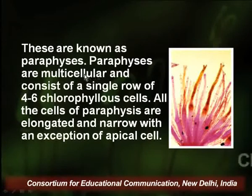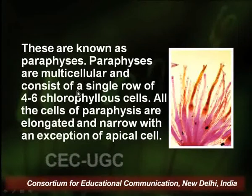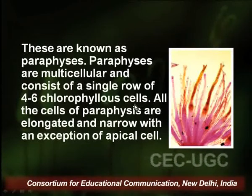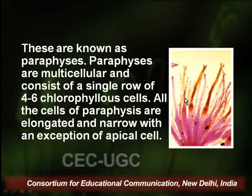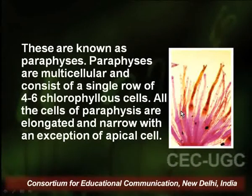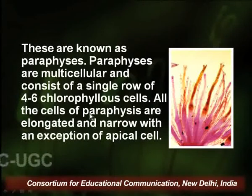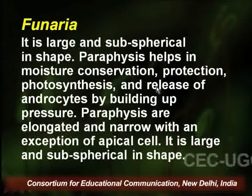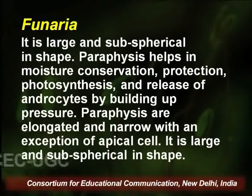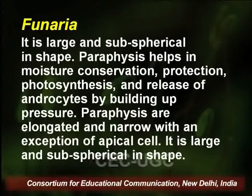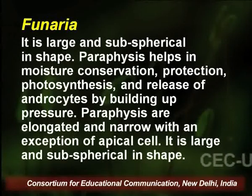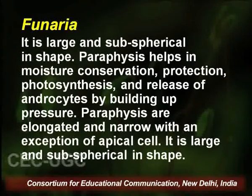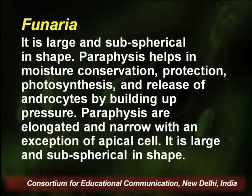Paraphysis are multicellular and consist of a single row of 4 to 6 chlorophyllous cells — you can see elongated hair-like cells in the diagram. All the cells of paraphysis are elongated and narrow with an exception of the apical cell, which is large and subspherical in shape. Paraphysis help in moisture conservation, protection, photosynthesis, and release of androcytes by building up pressure.